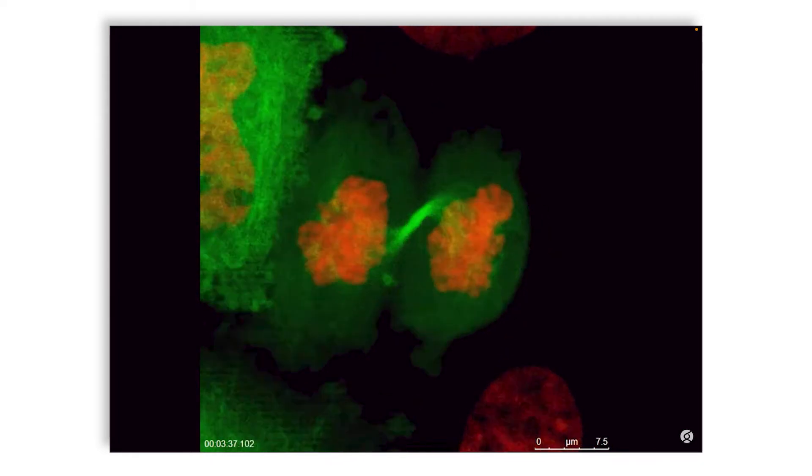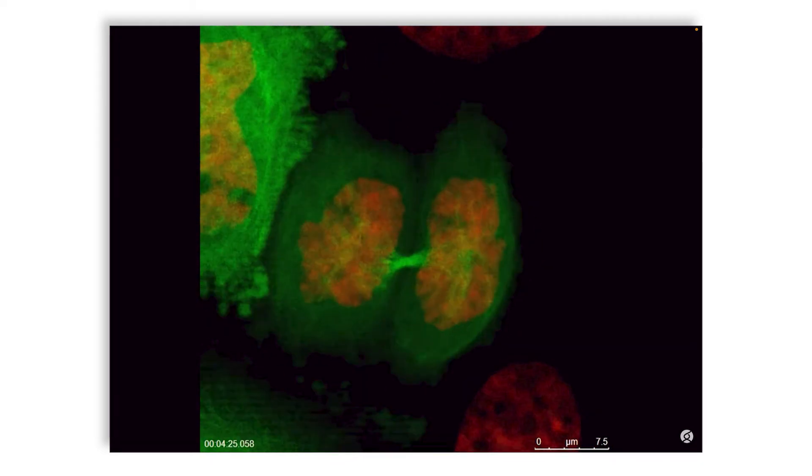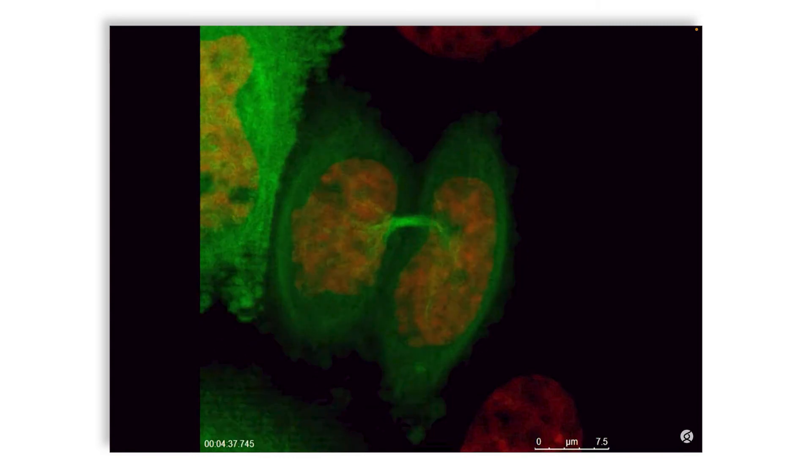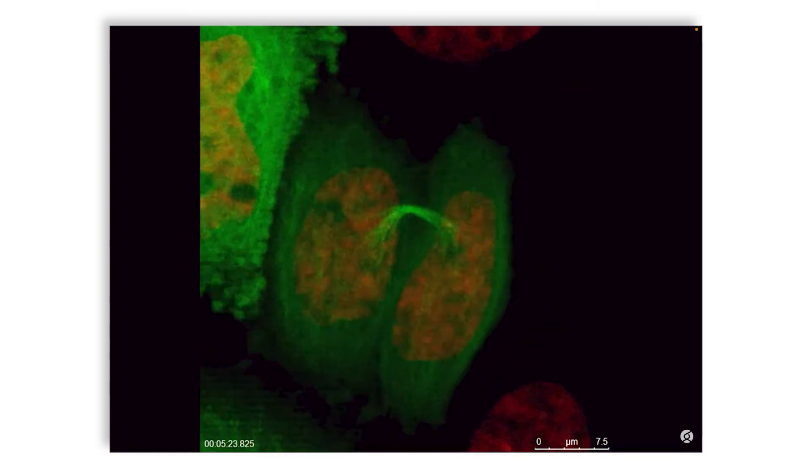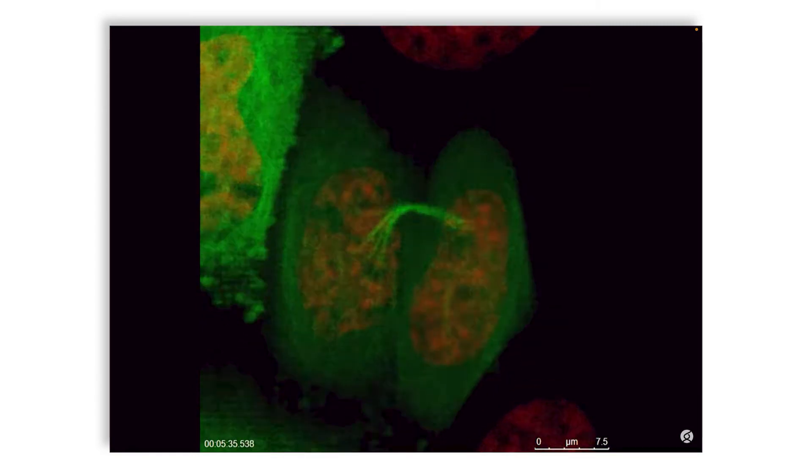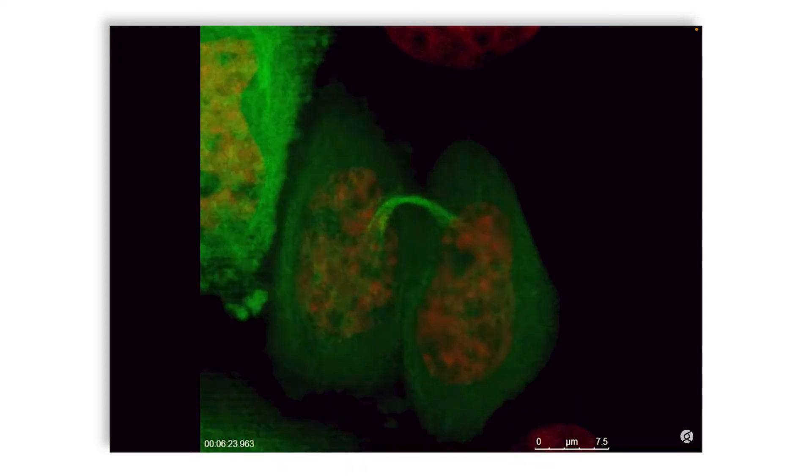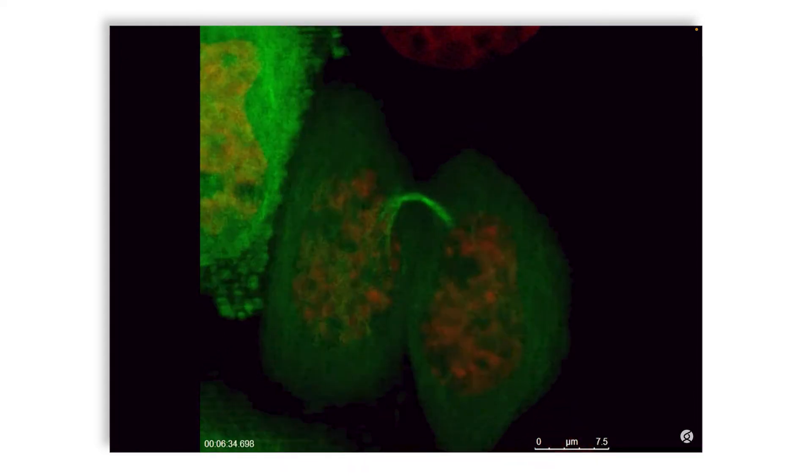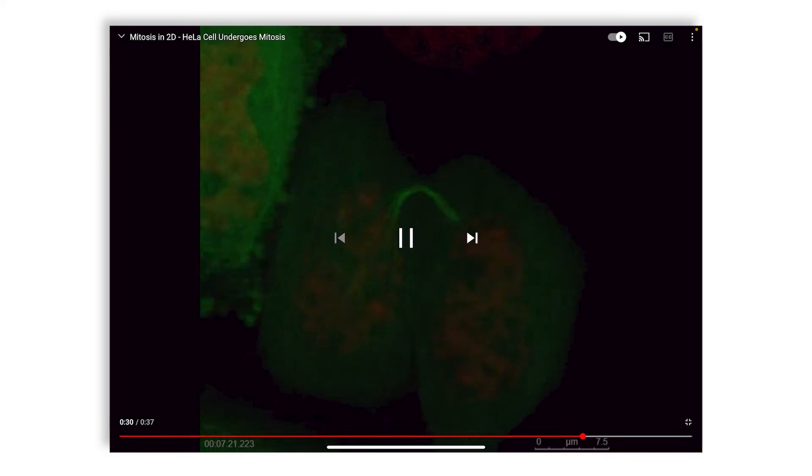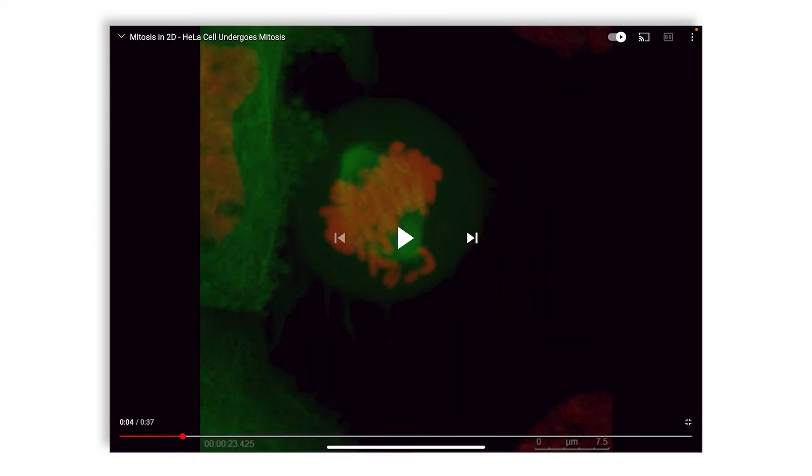You see this kind of pushing movement, which is the spindle segregation machinery. You see the strand of the spindle being eventually truncated. And if I go back to the beginning, you also see the chromosomes being pushed into an arrangement.